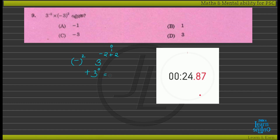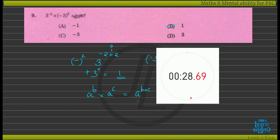Then plus 3 raise to 0 — this answer is 3 raise to 0. If you have any number raised to the power 0, then the answer is 1. So option B is the answer. This rule is: a raise to b into a raise to c equals a raise to (b + c). This rule is applied.